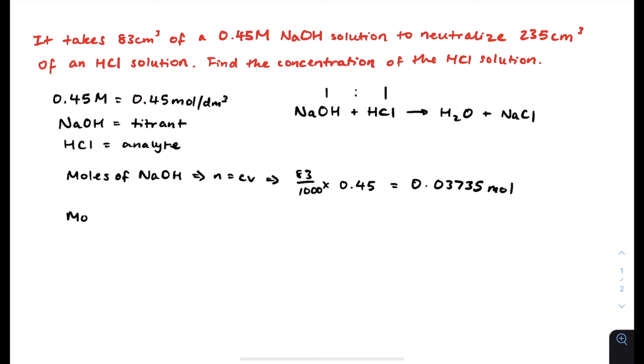Now let's find the moles of HCl. Since there's a one-to-one ratio, that means that the moles are the same as NaOH, which is 0.03735 moles.